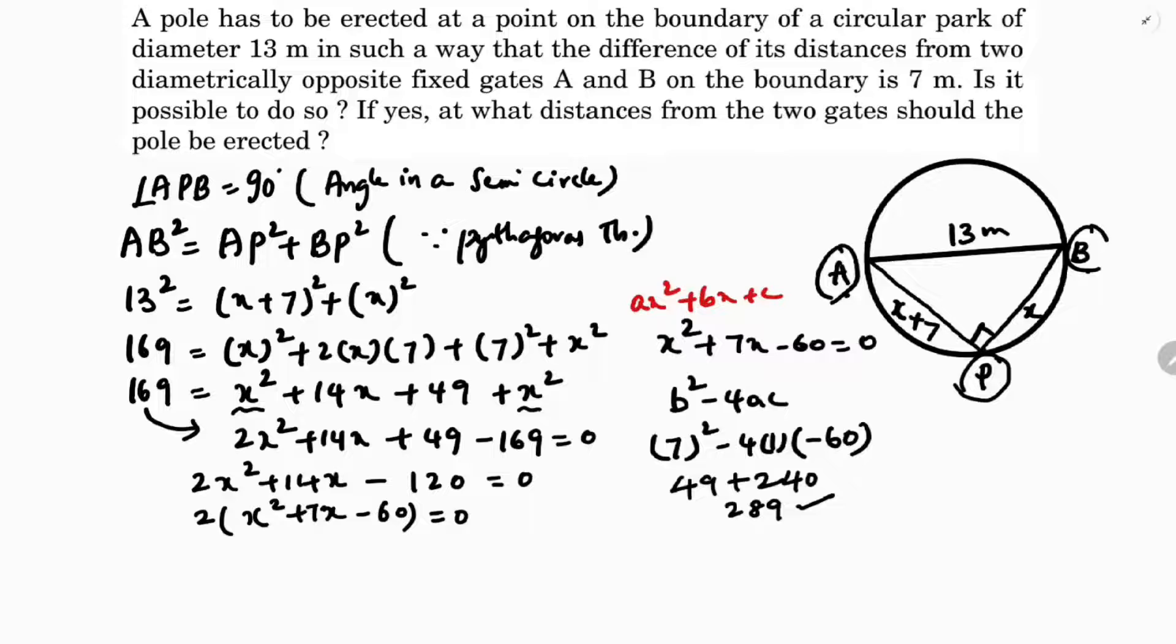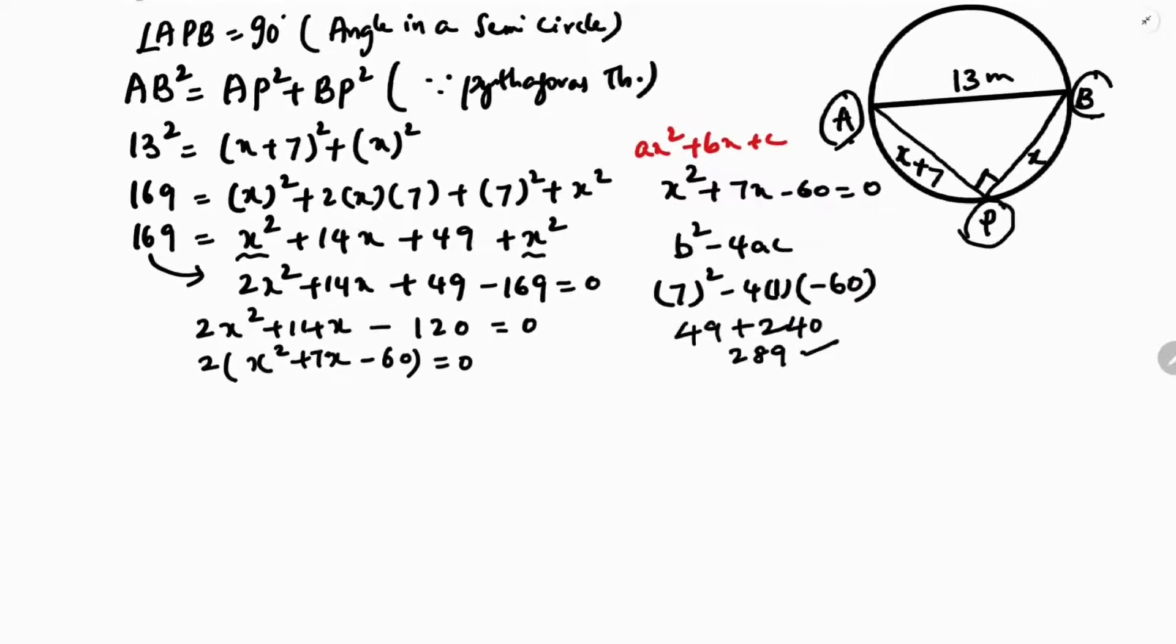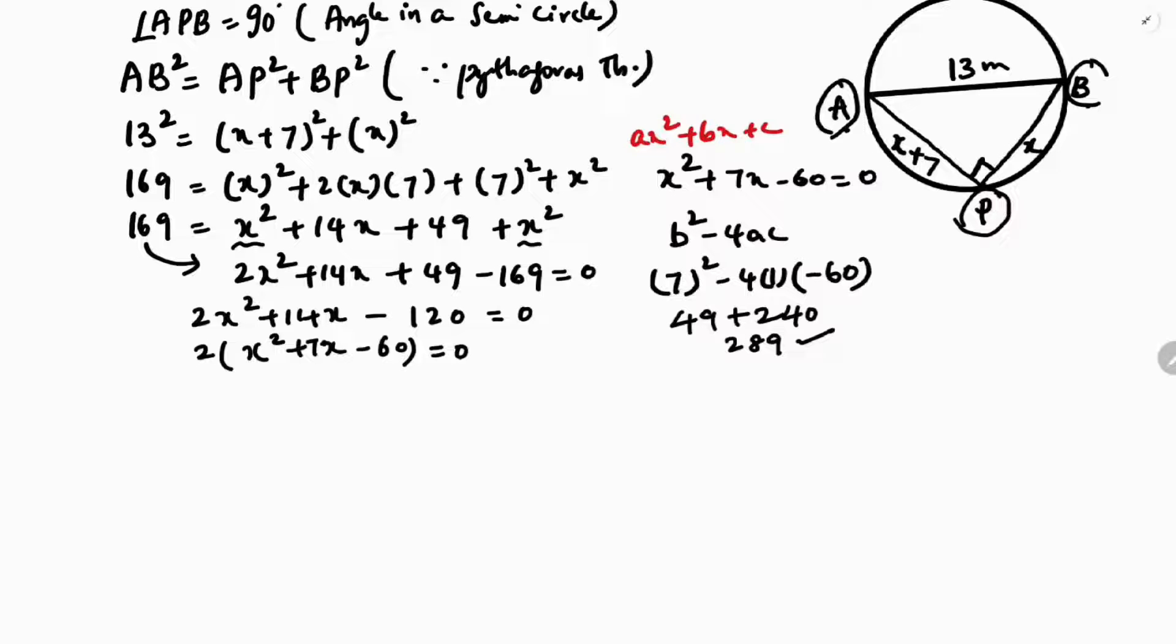They're asking again if it is possible at what distance, so we need to find the distance. So I'll factorize this quadratic equation. That is X square plus 7X minus 60. 60 factors I'll take 12 times 5. So X square plus 12X minus 5X minus 60. X if we'll take common, X plus 12, minus 5 if we'll take common, X plus 12.